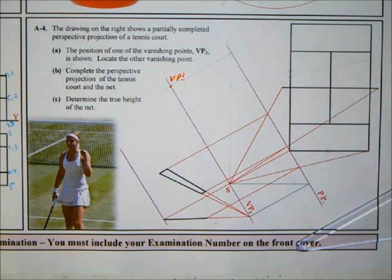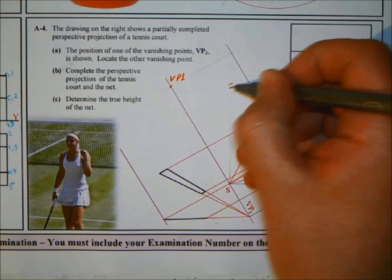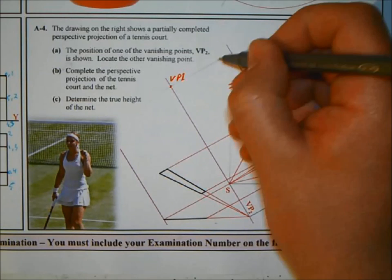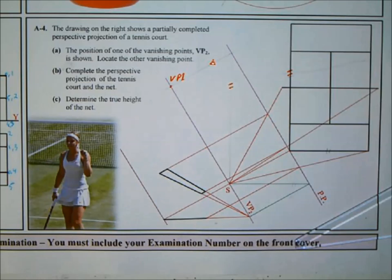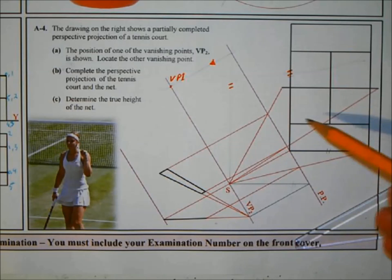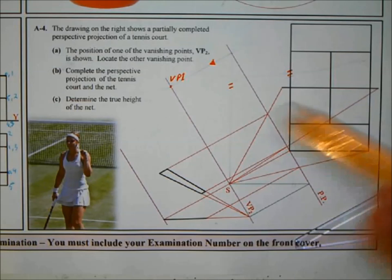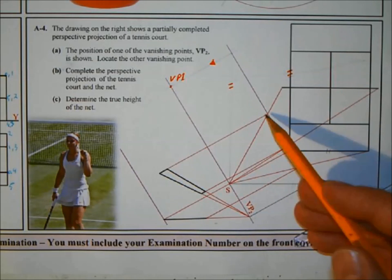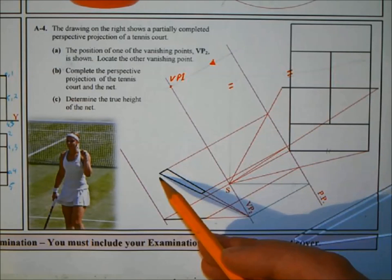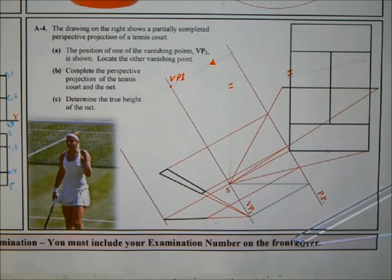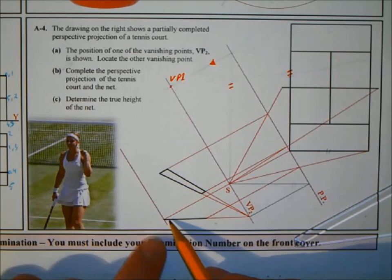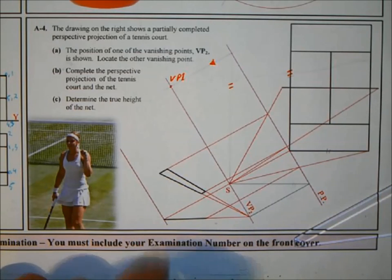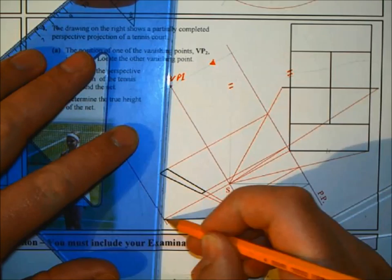Next, part b: complete the perspective projection of the tennis court and net. For any perspective projection, points must be connected to the spectator, and where that line crosses the picture plane you project that down. For this side of the net, join it to the spectator, where it cuts across picture plane PP, draw that down at your projection angle to get a line in the view. They've brought down this corner from the picture plane and joined it back to VP2 to give that edge. Now join it back to VP1 to get the front edge.